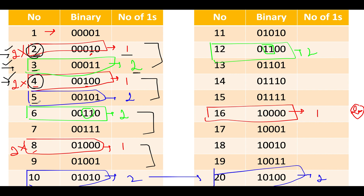Next, the number of ones in 5 uses 4 as its pair — 4 has one '1', add 1, you get 2. For 6, divide by 2 to get 3; ones in 3 is 2, so ones in 6 is also 2. For 7, which is odd, look at 6 (one less even number): 2 + 1 = 3. For 8, divide by 2 to get 4; ones in 4 is 1, so ones in 8 is 1.